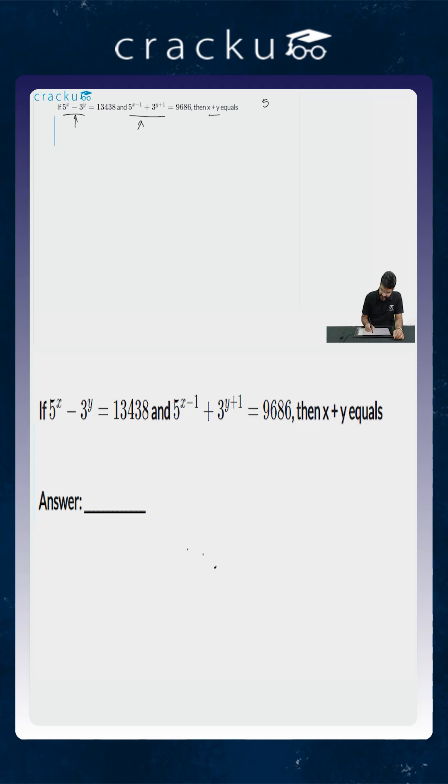So what we will do is, we will consider 5 to the power x to be equal to a and 3 to the power y to be equal to b. So we will first find out the value of a and b, from that we will find out the value of x and y and then calculate x plus y.